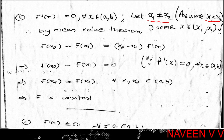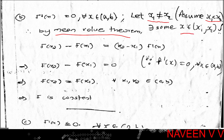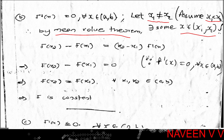Assume x1 < x2. As in the previous case, f is continuous on [x1, x2] and differentiable on (x1, x2). By the Mean Value Theorem applied to f on [x1, x2], there exists some x in (x1, x2) such that f(x2) - f(x1) = (x2 - x1) · f'(x). Since x is in (x1, x2) ⊆ (a, b), by assumption f'(x) = 0.